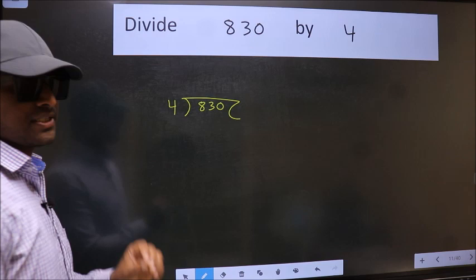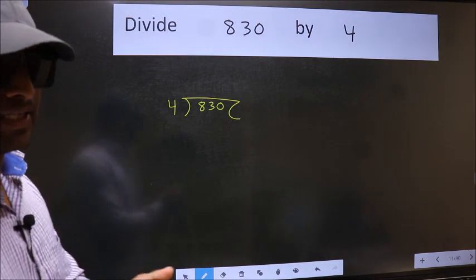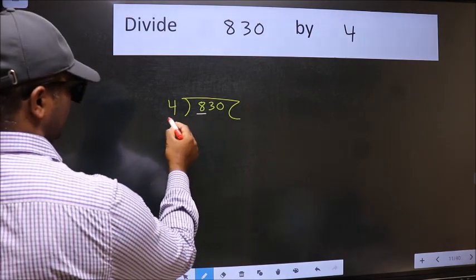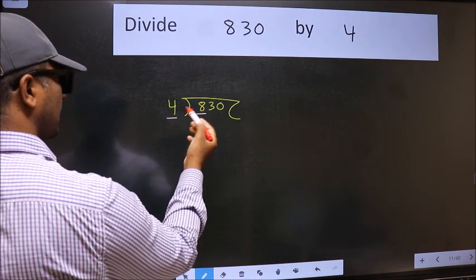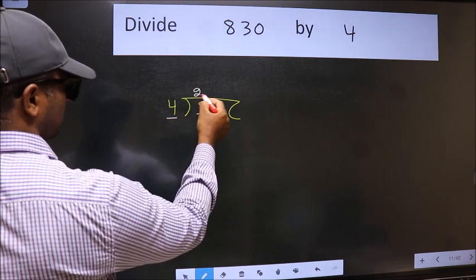This is your step 1. Next, here we have 8 and here 4. When do we get 8 in 4 table? 4 twos, 8.